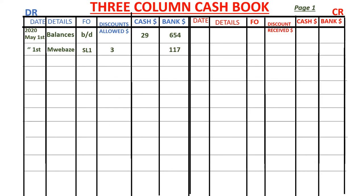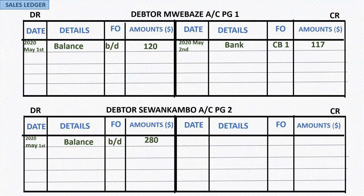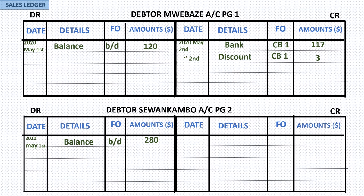After posting the discount allowed in the column, we go ahead and post a corresponding entry in the Mwebaze account in the sales ledger, treating the discount the same way as the cash payment — by crediting the Mwebaze account with $3. The folio column is filled with SL1, indicating the Mwebaze account is in the sales ledger on page one. If you look at the Mwebaze account, the debit side totals $120, and the items on the credit side also add up to $120, so the account balances.